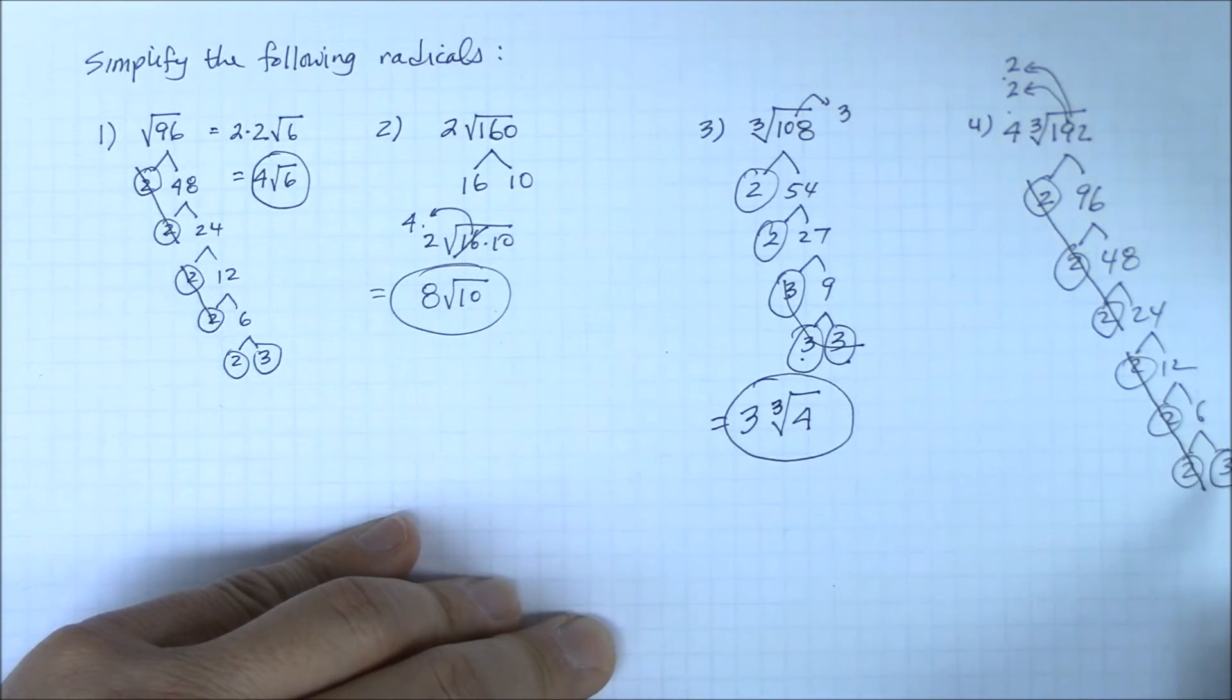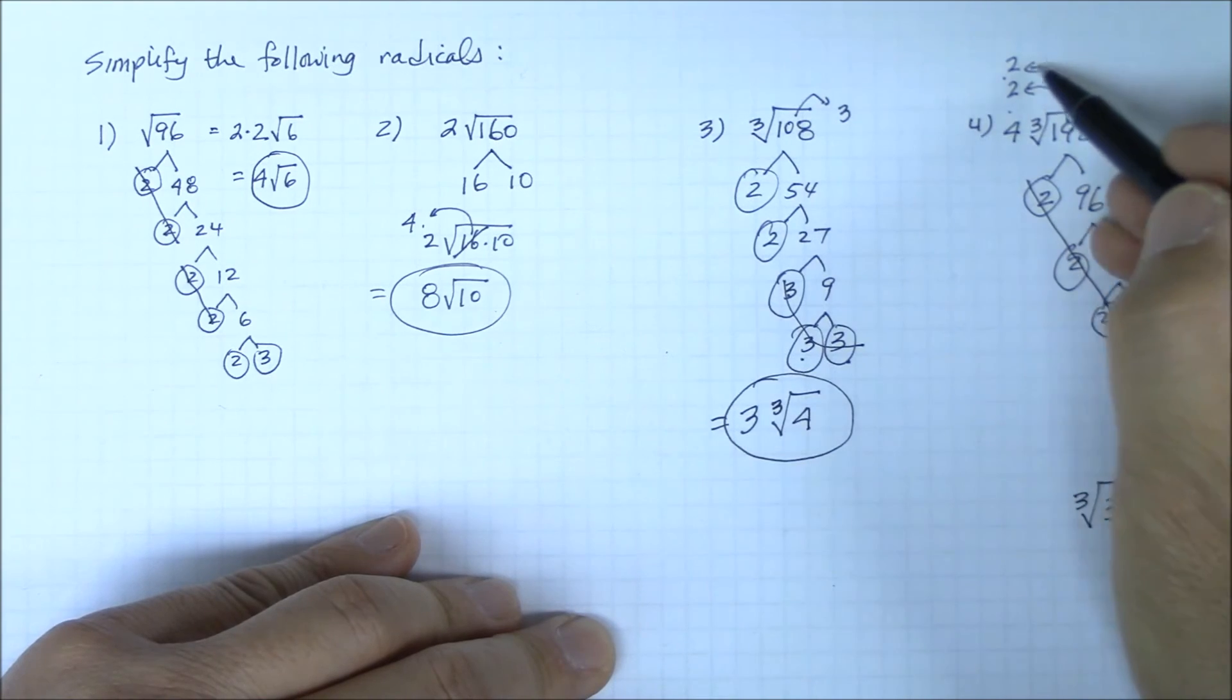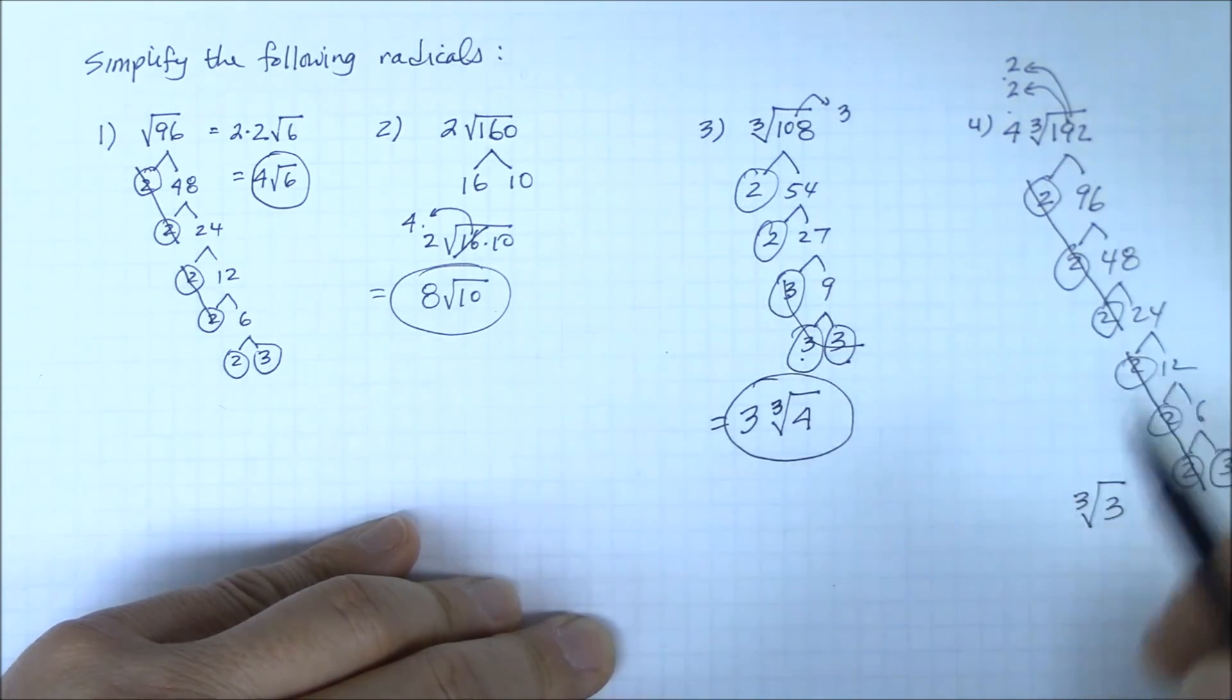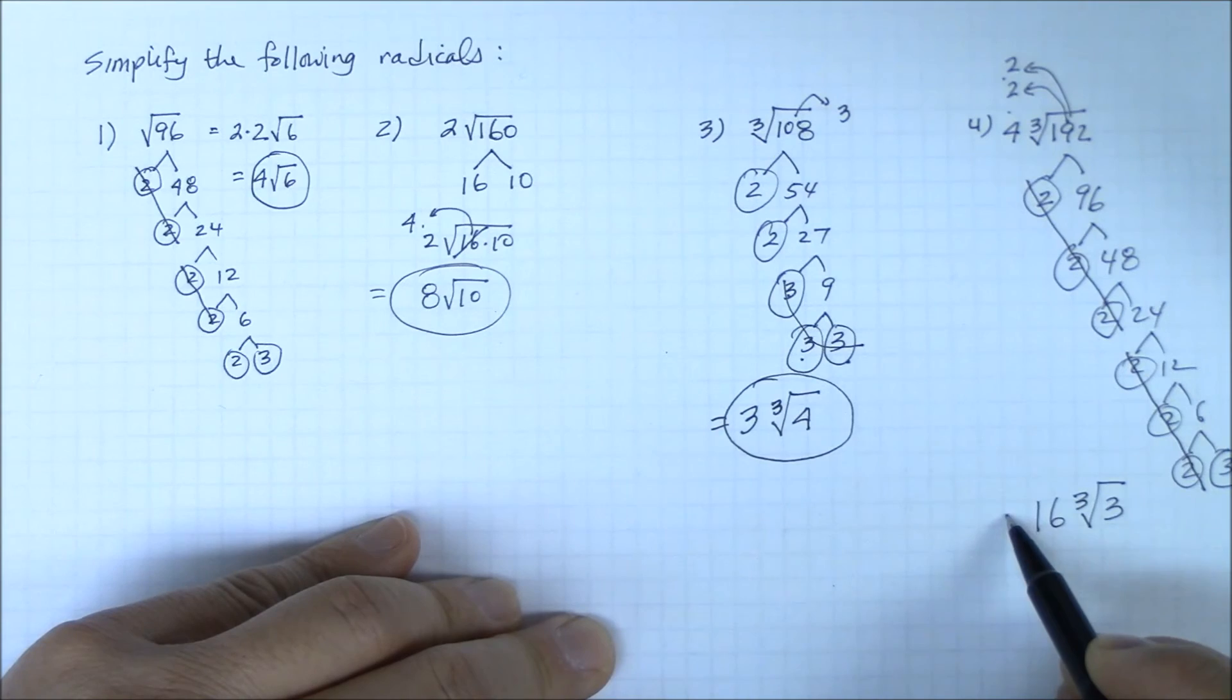What stays inside the radical is a lonesome 3. So we have cube root of 3 remaining inside. Whatever came outside, you multiply: 2 times 2 is 4, times 4 is 16. So your final simplified answer becomes 16 times the cube root of 3.